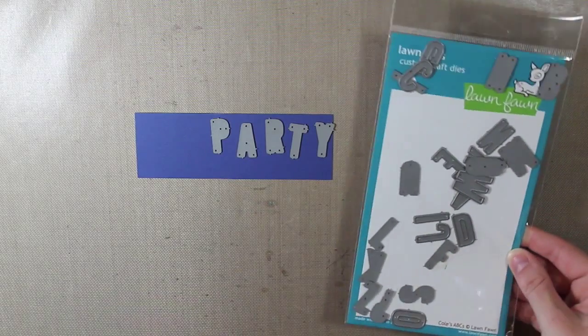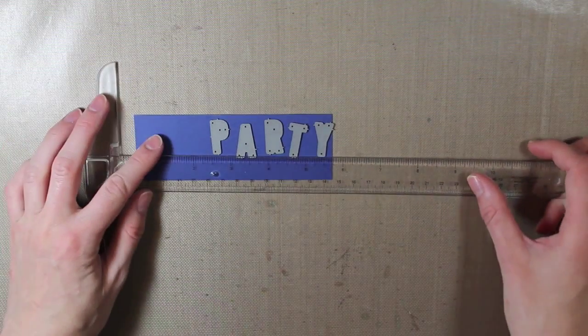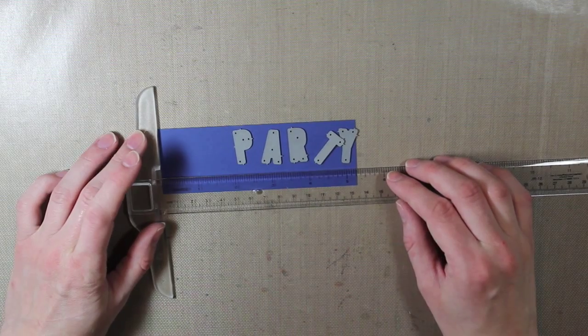Hello everyone, it's Tracy here back with another card tutorial. So I'm starting today with the Lawn Fawn Kohl's ABC's dies and I spelled out party.